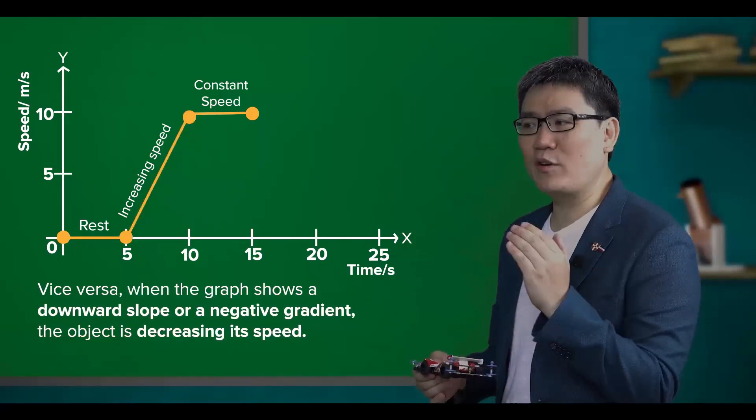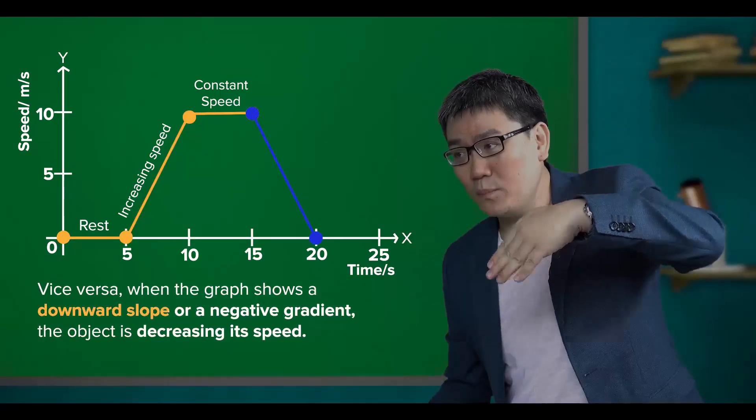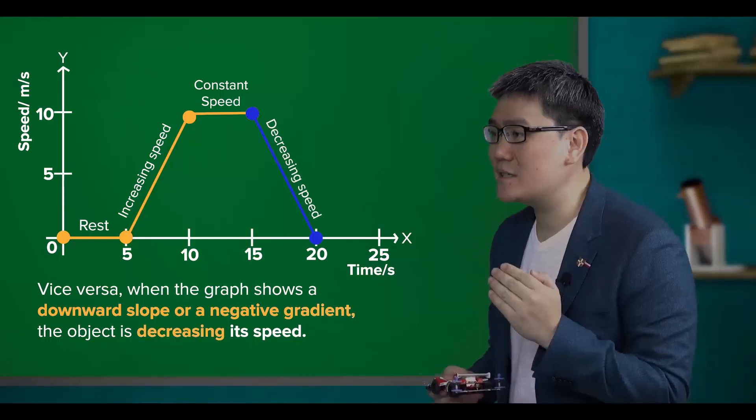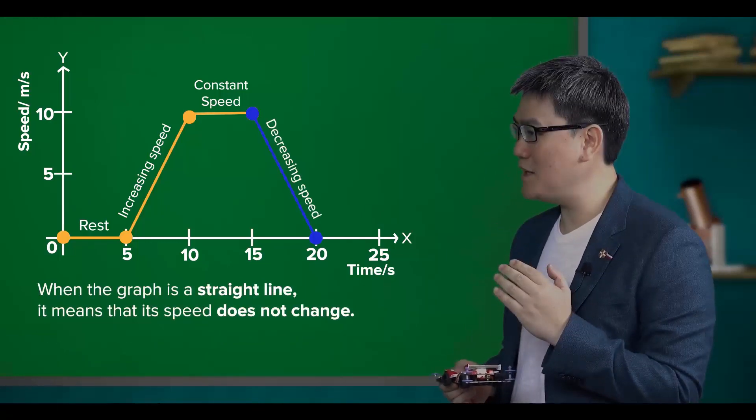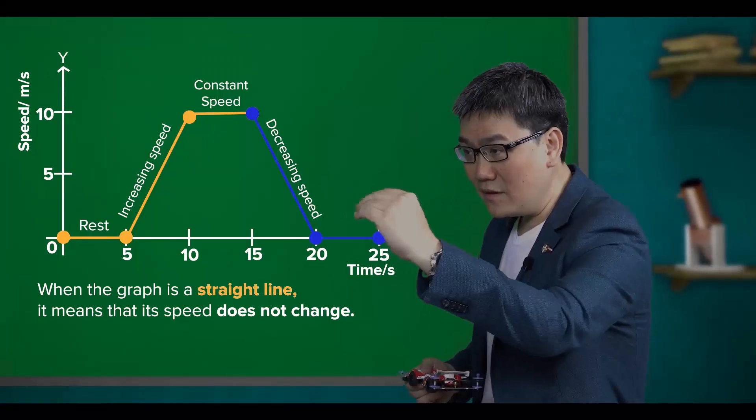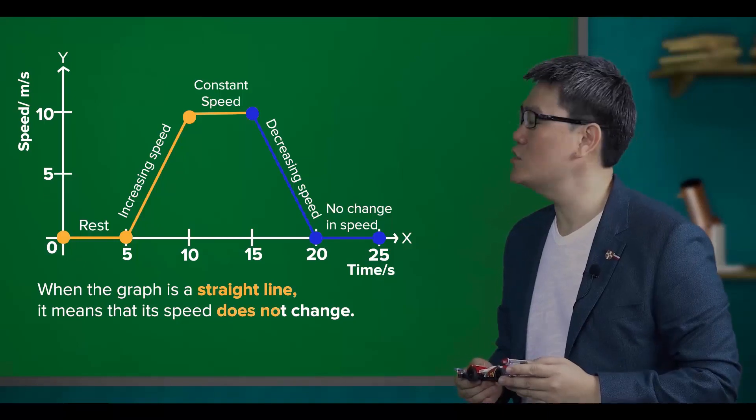Vice versa, when the graph shows a downward slope or a negative gradient, the object is decreasing its speed. Lastly, when the graph is a straight line, it means that its speed does not change.